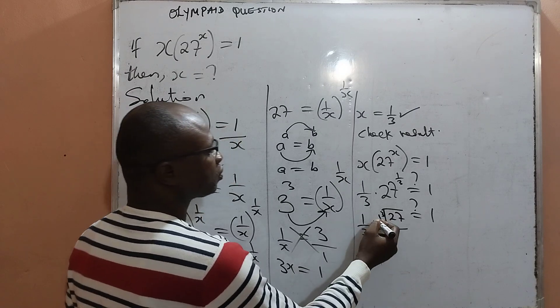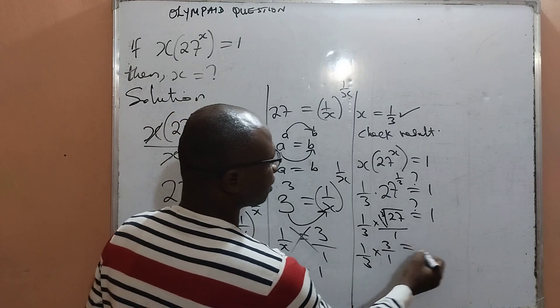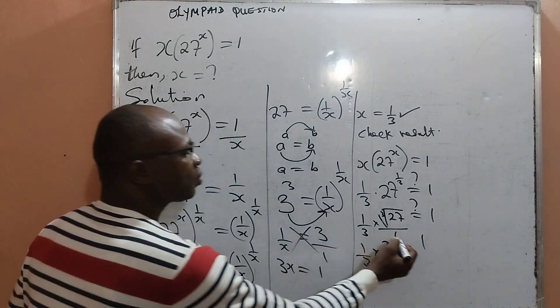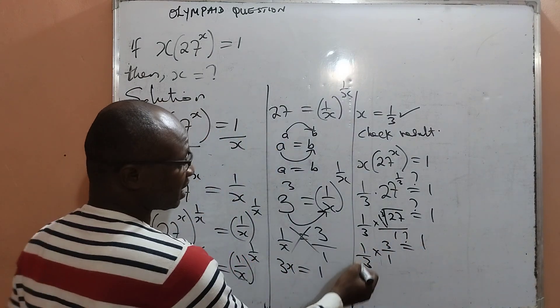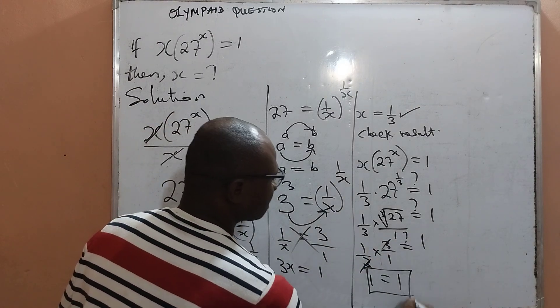But then, the cube root of 27 is essentially 3, all over 1 equal to 1. We want to find out if it will be 1. Yes, 3 can cancel out 3, leaving me with just 1 equal to 1. And therefore, the answer is confirmed.